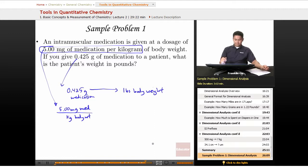Well this unit is 5 milligrams of medication and we're given 0.425 grams of medication. So we got to get the 0.425 grams of medication in the milligrams first. So 0.425 grams of medication times something over something is going to give us our answer in units of milligrams of medication.